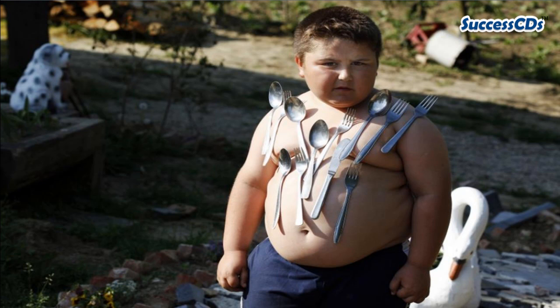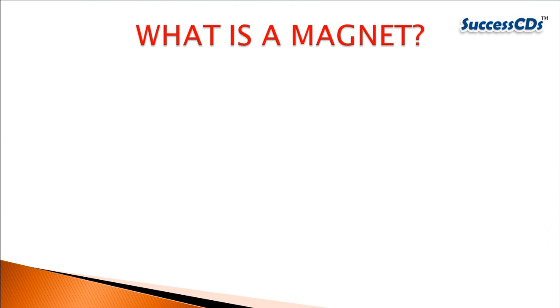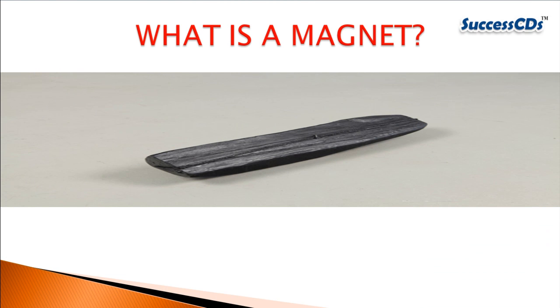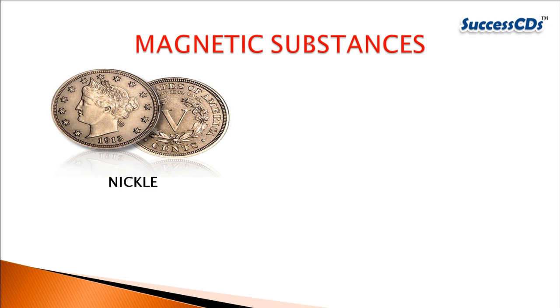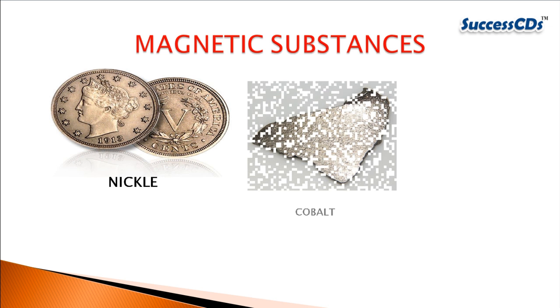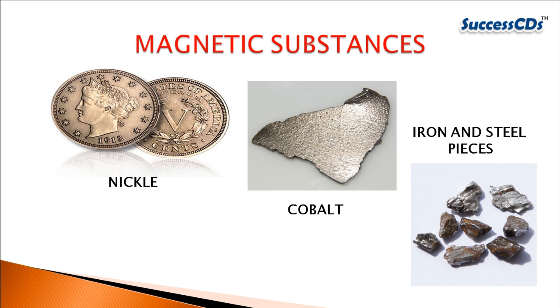Imagine if you wake up one day and find that you have the ability to attract things towards yourself — that would be real fun, isn't it! Well, there is a material in this world which attracts iron objects towards itself. It's called a magnet. Magnets can pull or push things made of nickel, cobalt, iron, and steel.